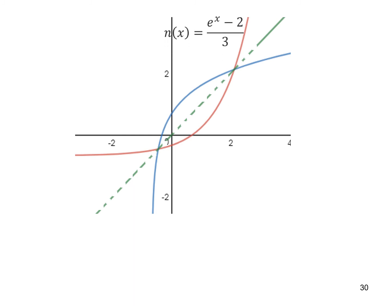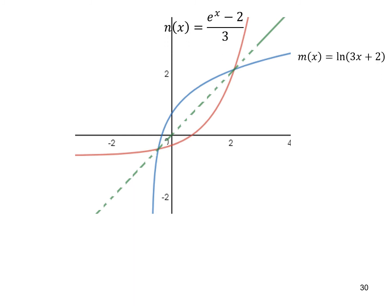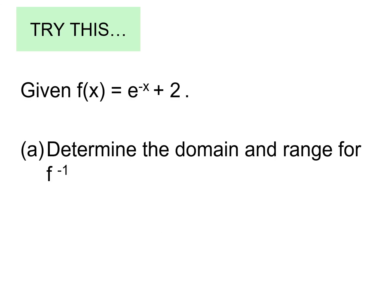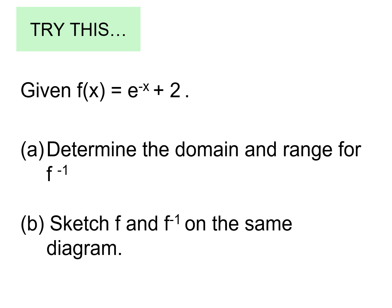Since n∘m = x and m∘n = x, m and n are inverses of each other. Their graphs reflect on each other about the line y equals x. This is the homework — try to solve the given questions. See you next time, bye bye.